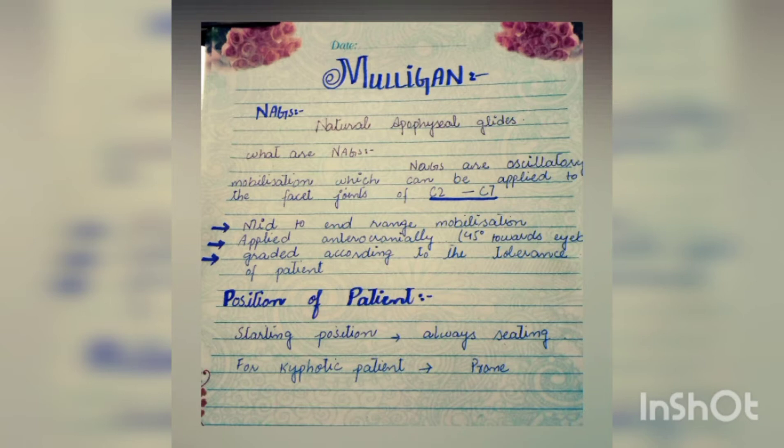Mulligan is a final year subject in which we study Apophyseal Glides. Mulligan comes under manual therapy. Today we will talk about a glide called NAG — N-A-G — Natural Apophyseal Glides.